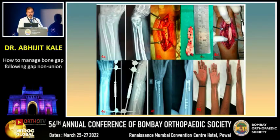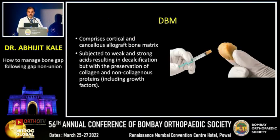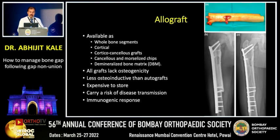Similar cases with post-infective gap non-union were also managed in a similar way. Non-vascularized autograft can be harvested from the iliac crest, distal femur, proximal tibia, fibula, distal radius, or olecranon. The chances of union with autograft are very high. Allogenic bone matrix can also be used, though it has lower osteoinductive potential.